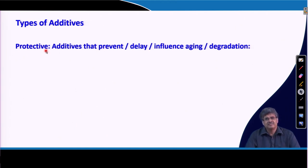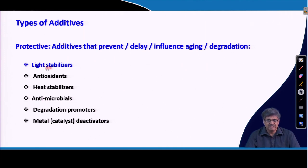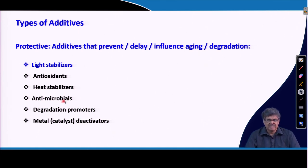There are different types of roles additives can play. Protective additives generally prevent, delay, or influence the aging or degradation behavior of the base polymer. Examples include light stabilizers acting against light exposure, antioxidants preventing oxidative degradation, heat stabilizers preventing heat-related degradation especially during processing, and antimicrobials protecting the polymer from microbial attack.